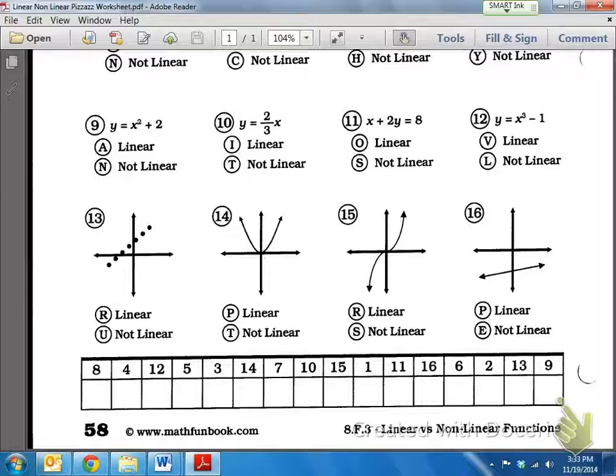Now, if there is a power, that means it's not linear. So, that means the graph will not be a line. So, we're looking for if the x has an exponent that is there. So, on number 9, it says y equals x squared plus 2. So, notice how it has the 2 right there. That means it is not linear.